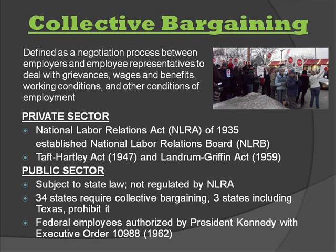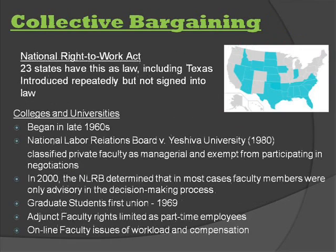Federal employees were authorized the right to form unions and engage in collective bargaining when President Kennedy signed an executive order in 1962. Currently, there is not a National Right to Work Act; however, 23 states have this as law, including Texas. The Act states that individuals may not be denied employment because of membership or non-membership in labor organizations. The law itself has been introduced repeatedly over the years but never signed into law.